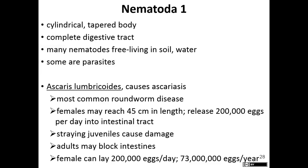So the first is Ascaris lumbricoides. This is the most common roundworm disease. There are male and female Ascaris worms. They can release up to 200,000 eggs every single day into the intestinal tract of the organism they're in. The juveniles tend to cause damage by moving out of the intestinal tract, causing tissue damage, whereas adults stay in the intestines but can block the intestines and cause all kinds of problems that way.